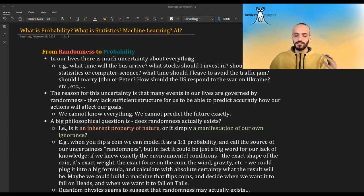Before we get to probability, we have to first explain what is randomness. So in our lives, we have a lot of uncertainty about just about everything. What time will the bus arrive? What stock should I invest in? Should I study statistics, computer science, something else? What time should I leave the house in order to avoid traffic jam? Should I marry John or Peter? Should the US respond to the war on Ukraine in this way or in another way?